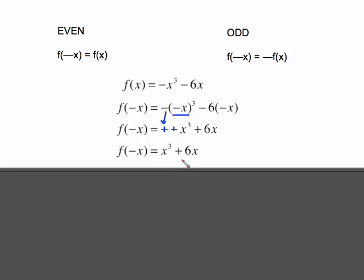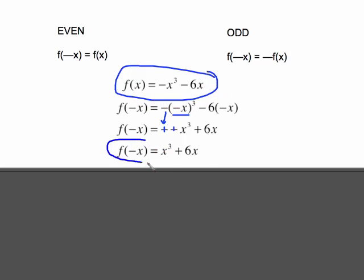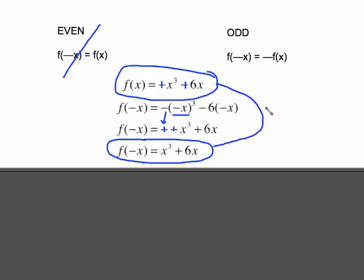Now we check if f of negative x equals the original function. The original function was negative x cubed minus 6x, and what we got after substitution is x cubed plus 6x. Are these two identical? No, so it is definitely not even. The other thing to check is if this new function is the exact opposite of the original — if I change all those signs, do I get the new one? Yes: those become positive and positive, and these two things are now identical, which means this is an odd function.